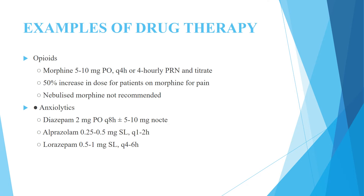Opioids — morphine: 5–10 mg per oral every 4 hours or 4-hourly PRN and titrate. 50% increase in dose for patients already on morphine for pain. Nebulized morphine is not recommended.